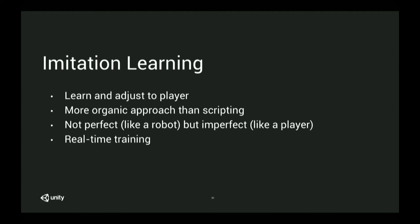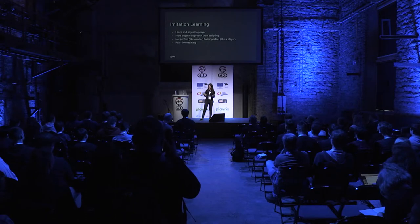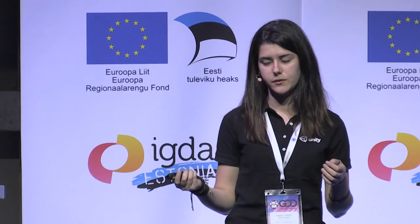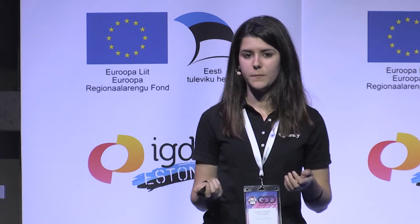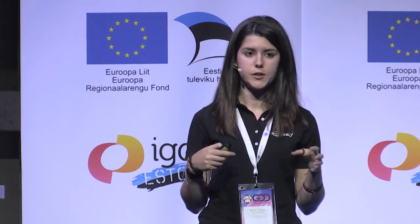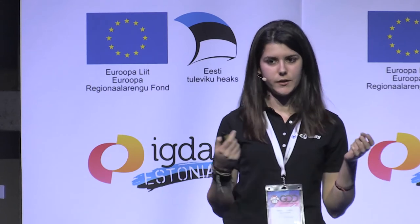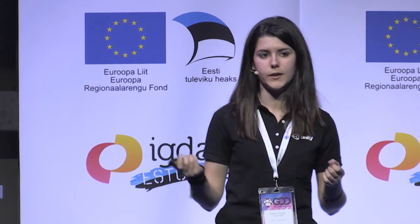Another exciting thing is that in Unity, imitation learning happens in real time — we perform the training while playing as the teacher. In this demo, I'm going to apply machine learning agents to an existing, already completed game, to show how it's possible to introduce ML agents into your finished game — though it's not necessary to wait until the end; you can do it at any time.